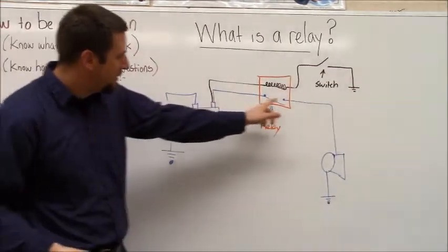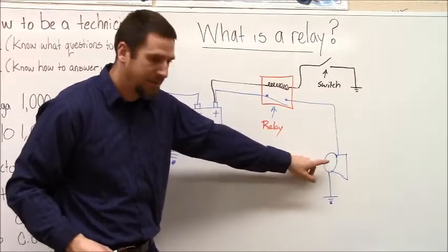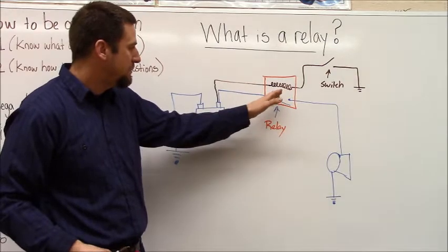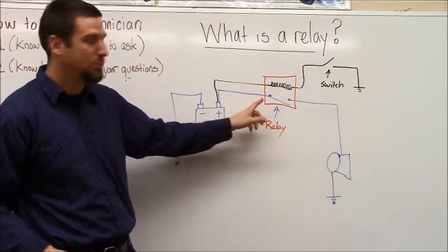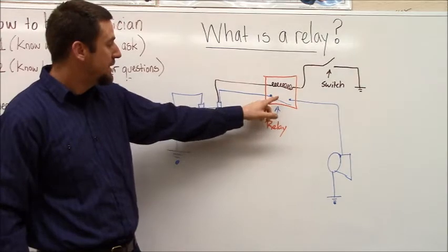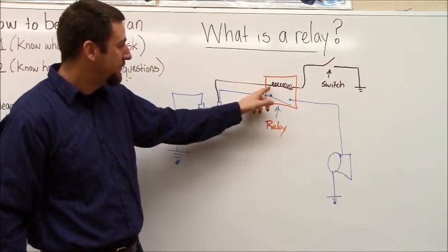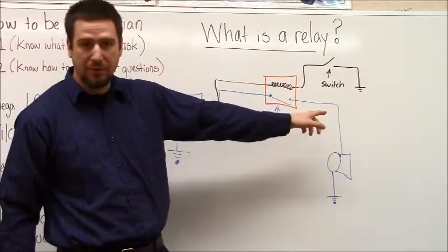So we still have the high current side of the circuit, there's a horn, and rather than this being a switch, this orange box represents a relay, and inside the relay is a switch that's controlled by a magnetic field produced from current running through wires.